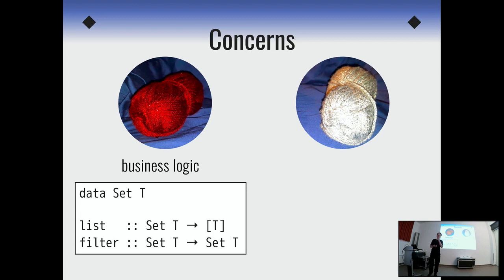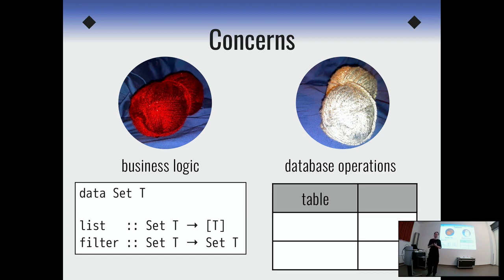So that was the generic talk. Every talk about programming could begin like this. Now we come into the specifics, the specific concerns that we can separate. So here is a concern. Let's call it business logic. Let's keep it very simple. So I have a set, a data type, a set of things, set of Ts. And I have two operations on them. One is I list all the things in the set. So it takes this data type and returns a list of things that are in it. And then I also consider a second operation, let's call it filter, which takes a set of things and removes some of them according to some criteria.